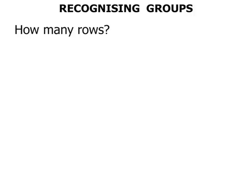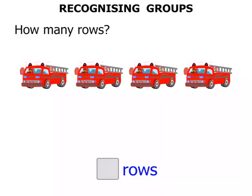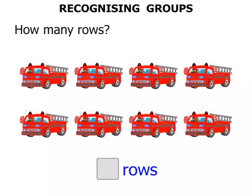How many rows? We'll write our answer down here. One row of fire engines. Two rows of fire engines. We've got two rows.